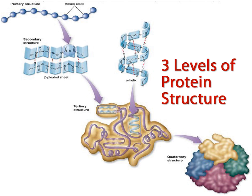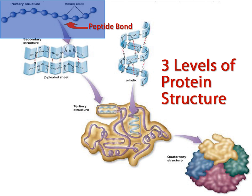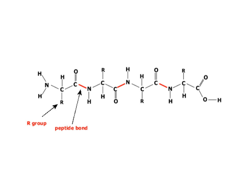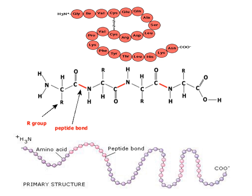The first level of protein structure is called the primary structure and it is simply a straight chain of amino acids. The bond that holds this structure together is called a peptide bond, which holds one amino acid to another and is located between the nitrogen of one amino acid and the carbon of another. Here are a few diagrams to give you some idea as to how a primary protein molecule may be represented.